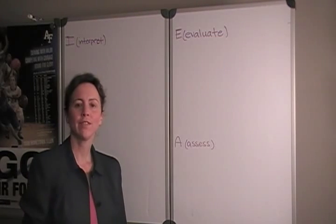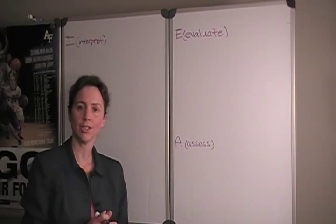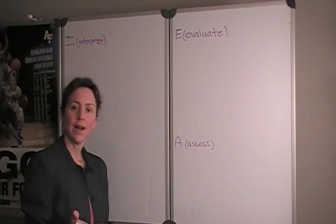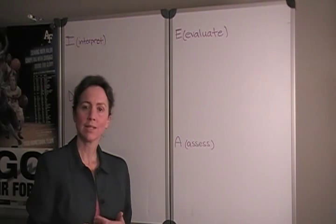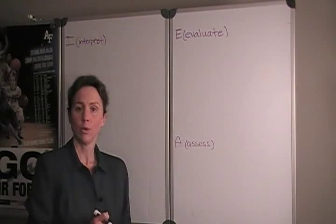In this problem, we're given position as a function of time of a model rocket launch, and we're asked then to find an expression for the velocity, and we're further asked, well, when will that velocity equal zero?